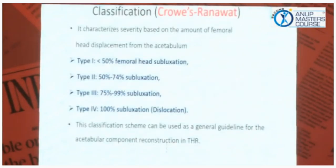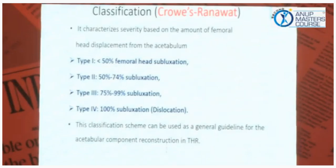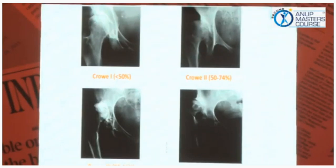The standard Crowe and Ranawat classification is characterized especially based on the amount of femoral head displacement from the acetabulum. Less than 50% is type 1; 50–75% subluxation is type 2; 75–95% is type 3; and 100% subluxation or dislocation is type 4. This scheme is a guideline for acetabular component reconstruction — it helps determine where and how to place the cup.